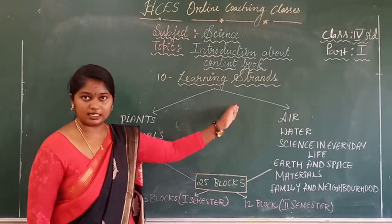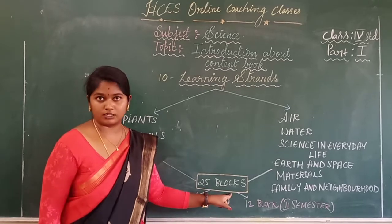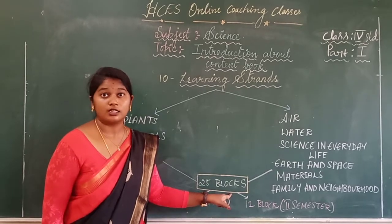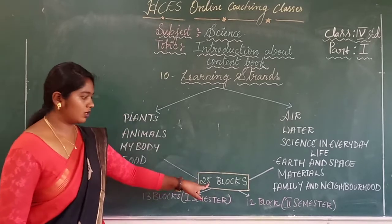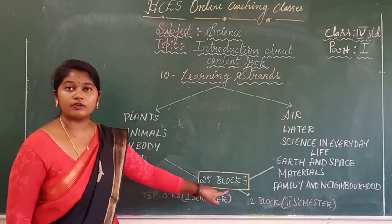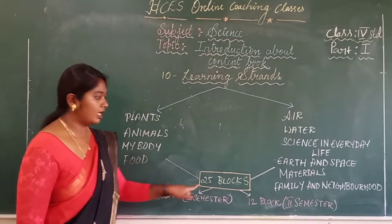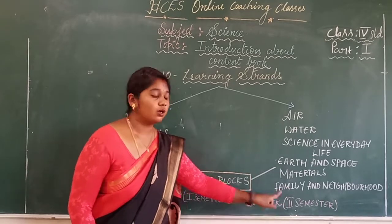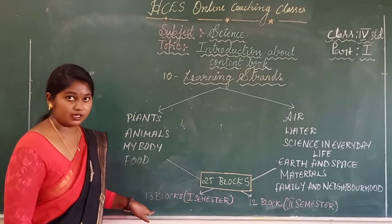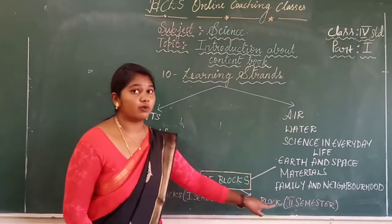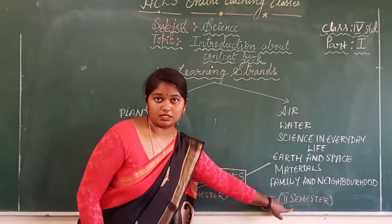Under these learning strengths, we have 25 blocks for the academic year. These 25 blocks are divided into 13 blocks and 12 blocks — 13 blocks are studied in the first semester and the remaining 12 blocks are studied in the second semester.